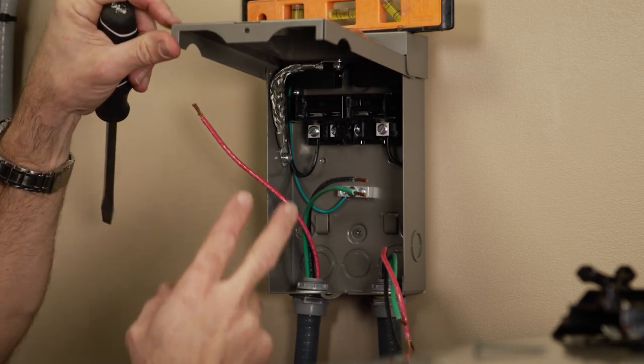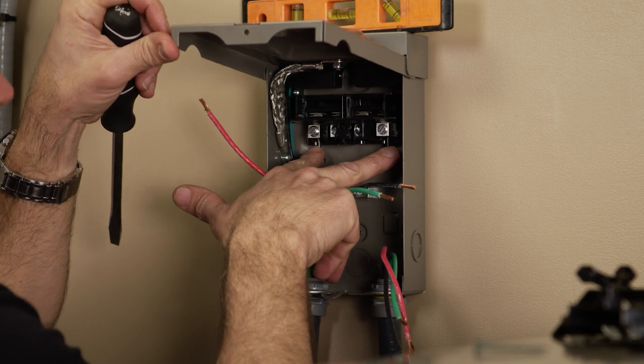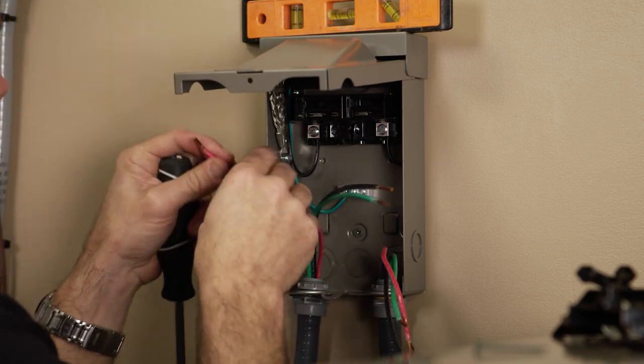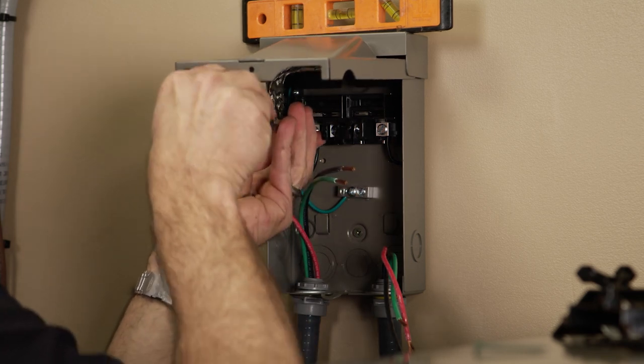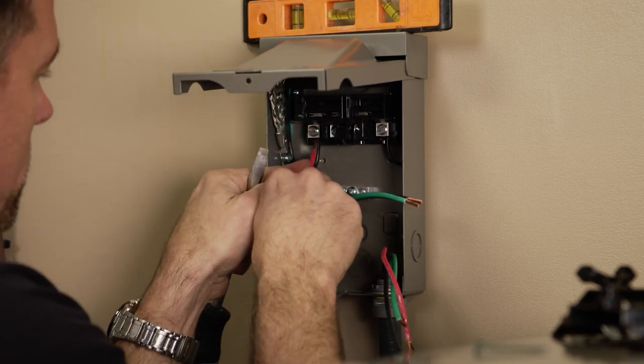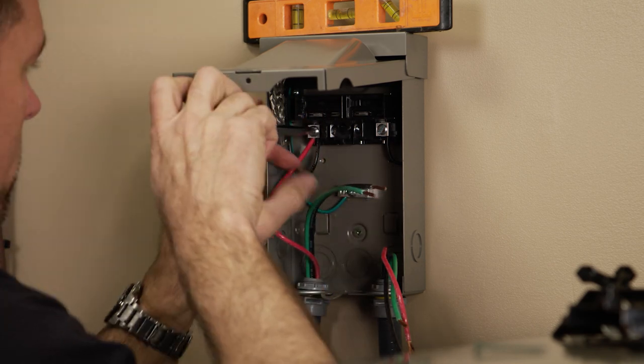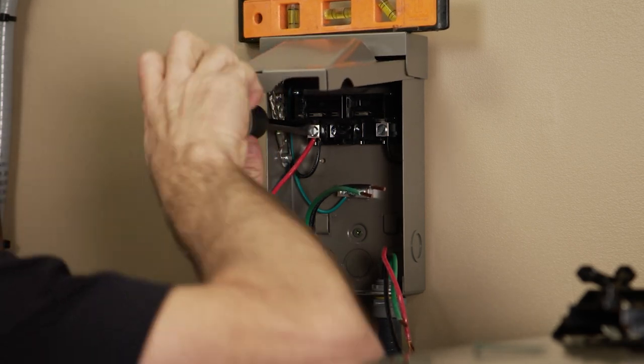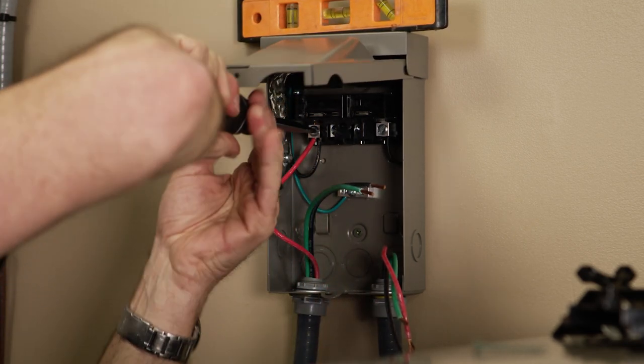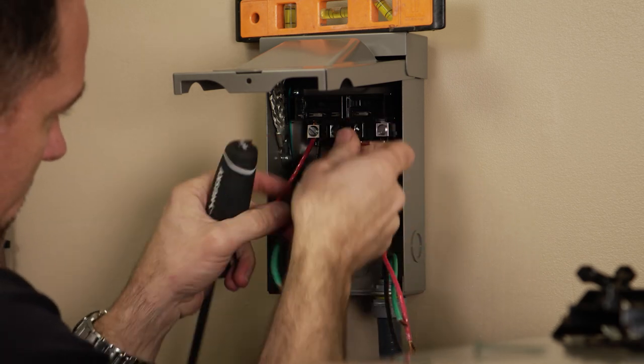So from the factory the surge protector is pre-wired to the line lugs on the disconnect here. So we're just going to loosen the screws. Just one wire at a time, make sure the wire didn't fall out. Make sure that's tight. Move on to the other side.